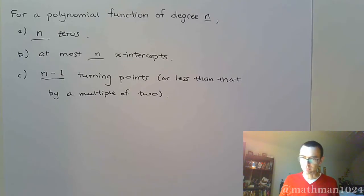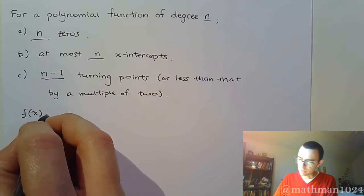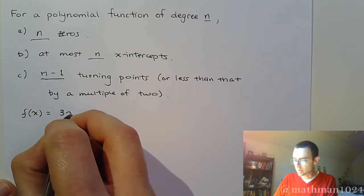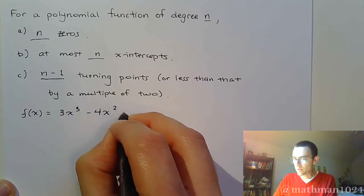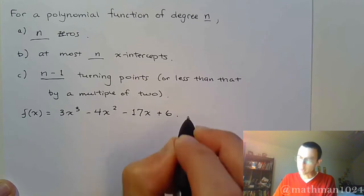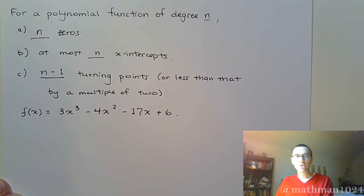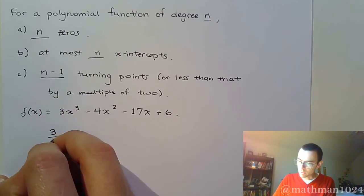Now, as an example, you see there in the notes that I wrote, as an example, 3x to the third minus 4x squared minus 17x plus 6. So, this is a polynomial function of degree 3. So, what does this mean? This means that we have three zeros.